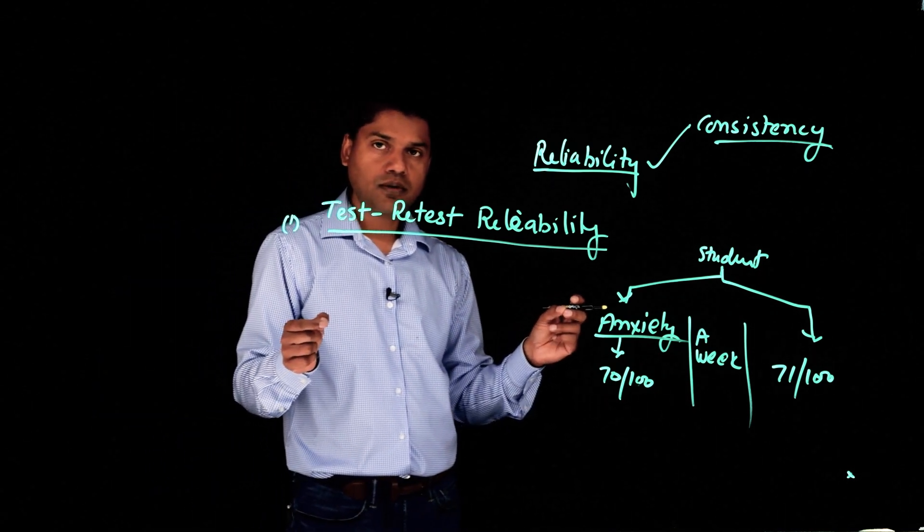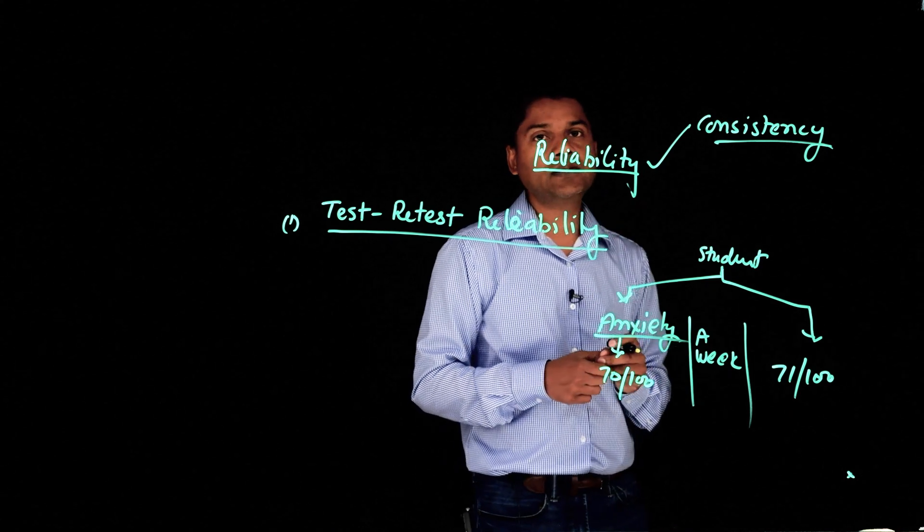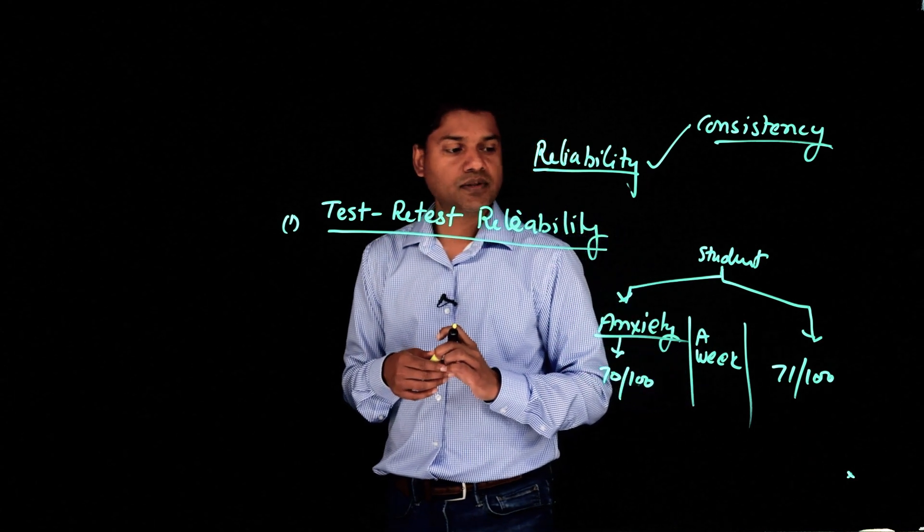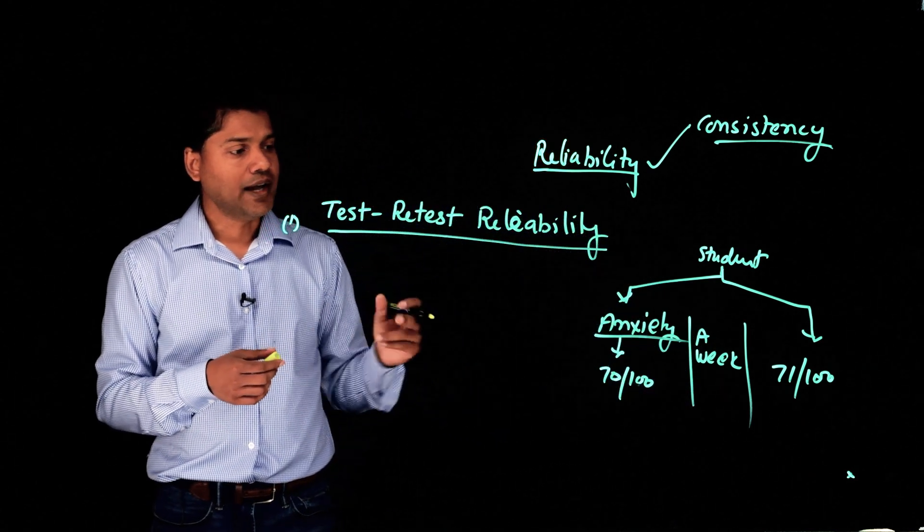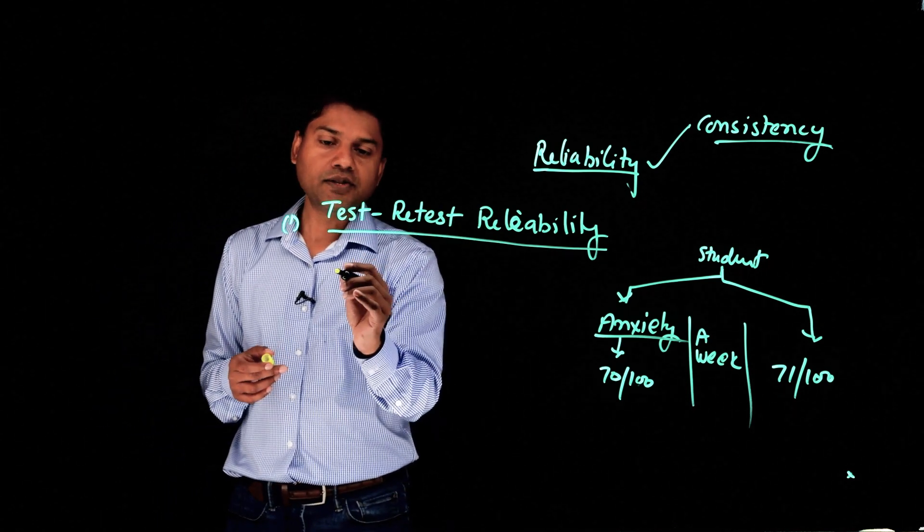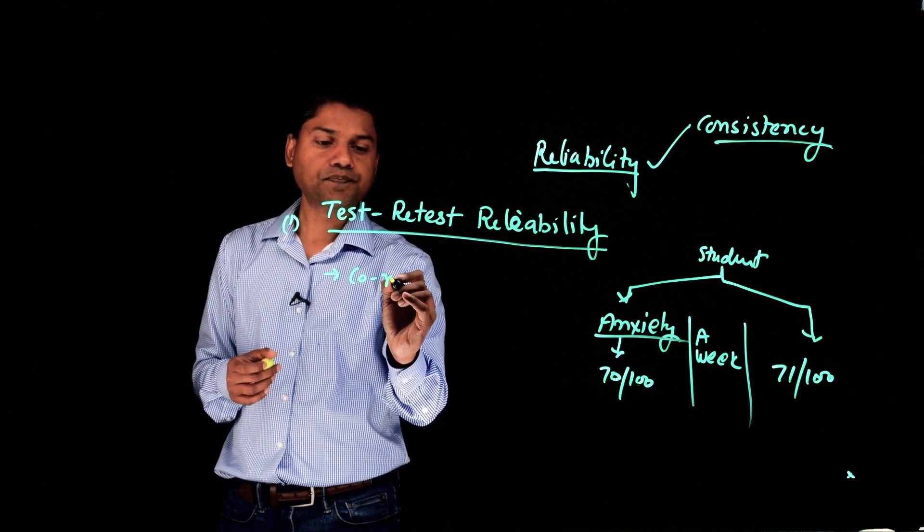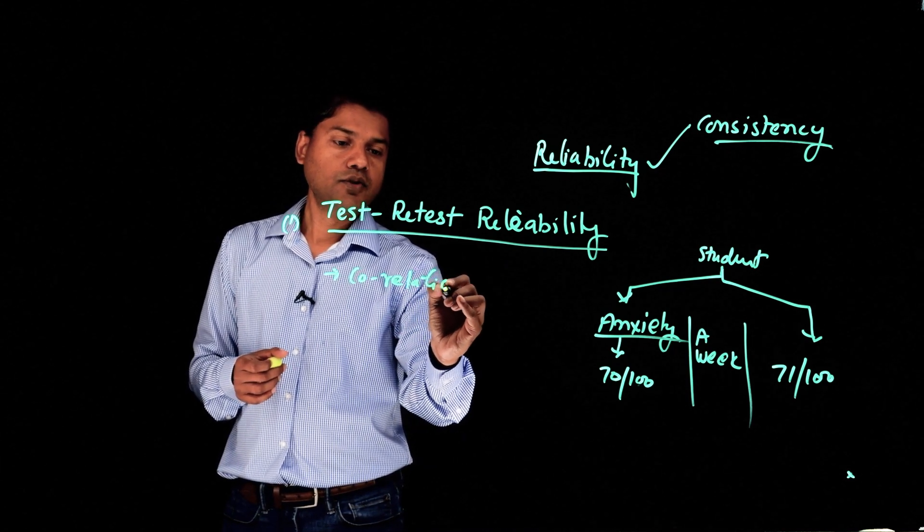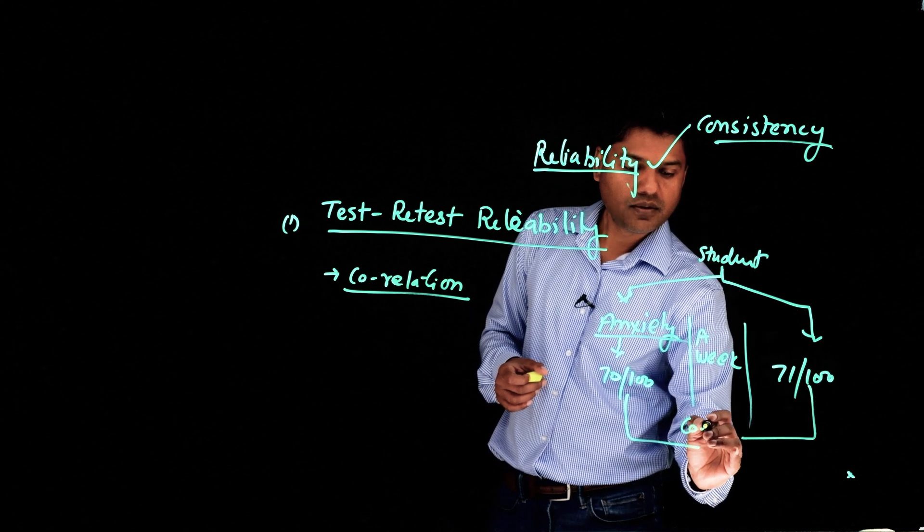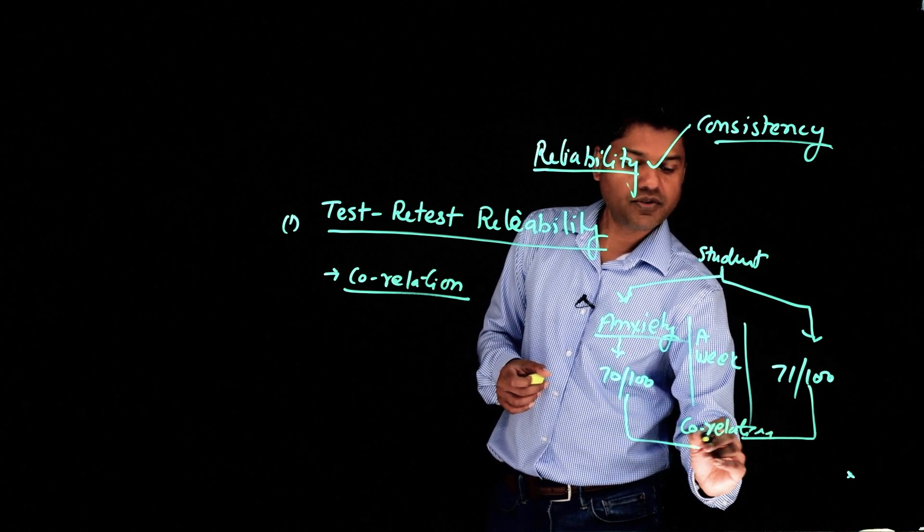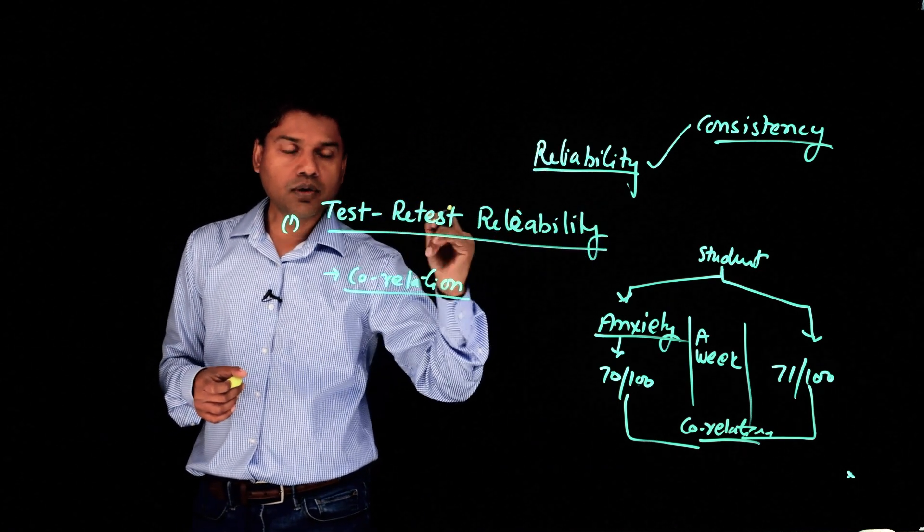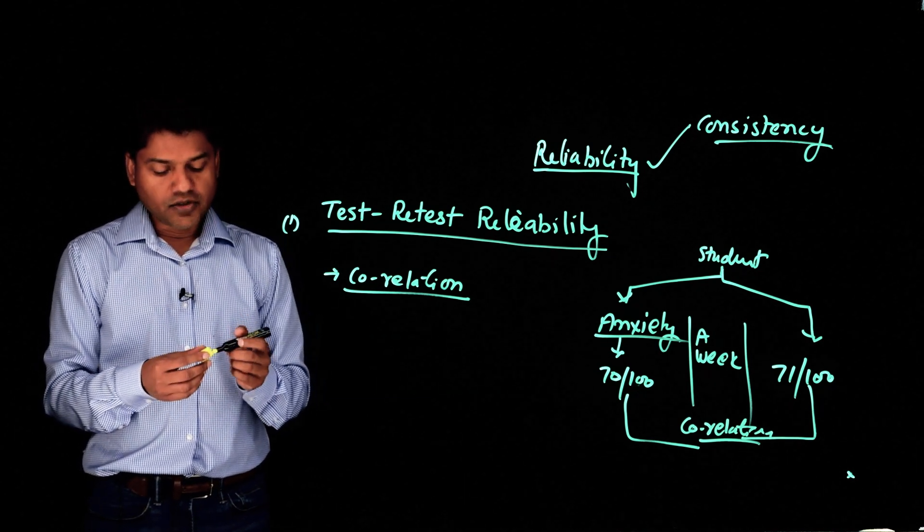If the scores are closer in both cases, then this test has high reliability. And if there is a huge difference, then this is not reliable. And to calculate reliability, test-retest reliability, we use a statistical process which is called correlation. So we establish correlation between both these scores. The higher the correlation, the higher reliability. Lower the correlation, lower reliability.